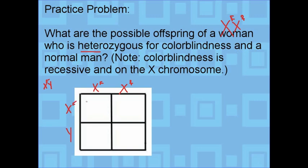Then you can do this on your own, but just carry the alleles down just like in a normal Punnett square, and you can see all of the genotypes for the children.